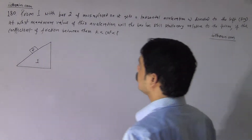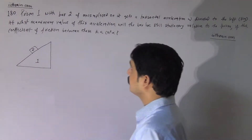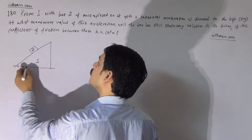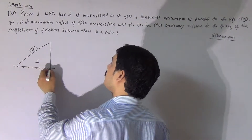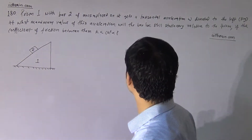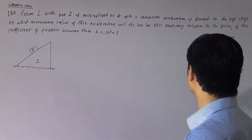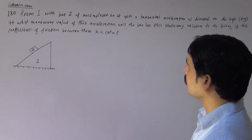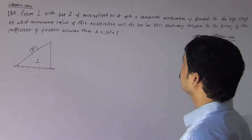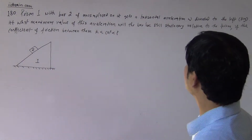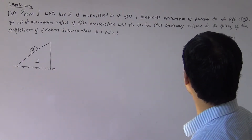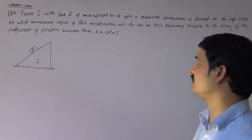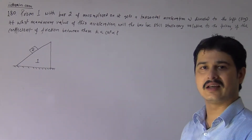Hello students, this is problem 1.8. Prism 1 with bar 2 of mass m is placed such that the prism moves down with a general acceleration W directed to the left, as shown in the figure. At what maximum value of this acceleration W will the bar B still be stationary relative to the prism, if the coefficient of friction between them K is less than cot(alpha)?